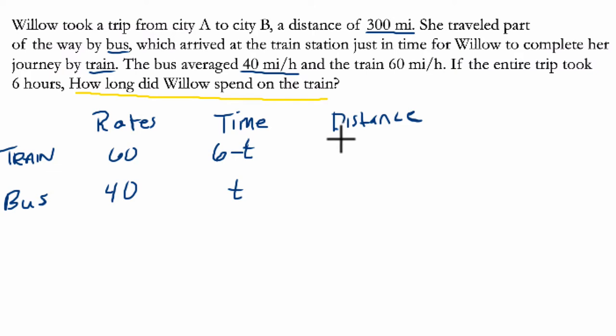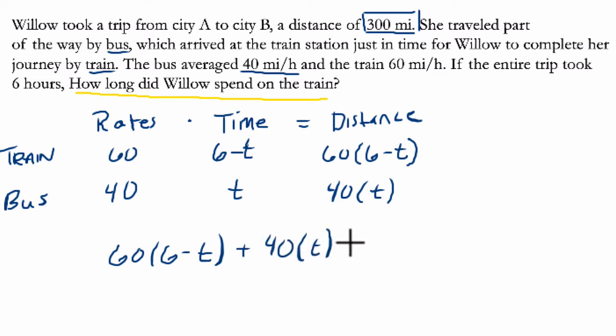What about the distance here? We know the total distance is 300 miles. But let's go a little bit further. If we do rate times time, that gives us distance. So here, for the train, it would be 60 times 6 minus t. That will give us the distance of the train. And 40 times t, that will give us the distance of the bus. And if we put these together, 60 times 6 minus t and 40 times t, we're going to get the total distance of the trip, 300 miles.